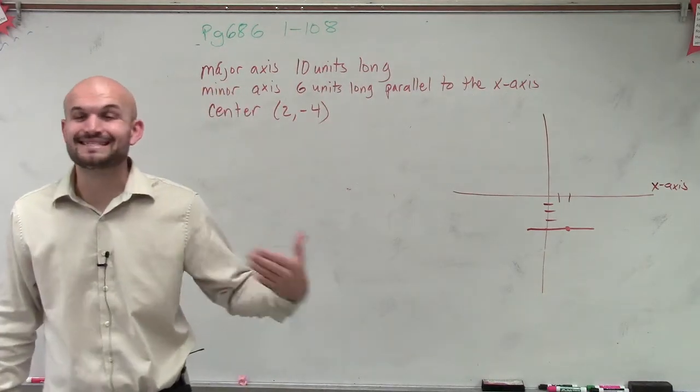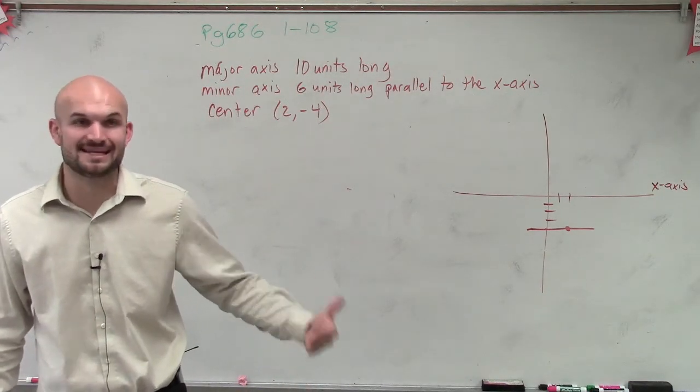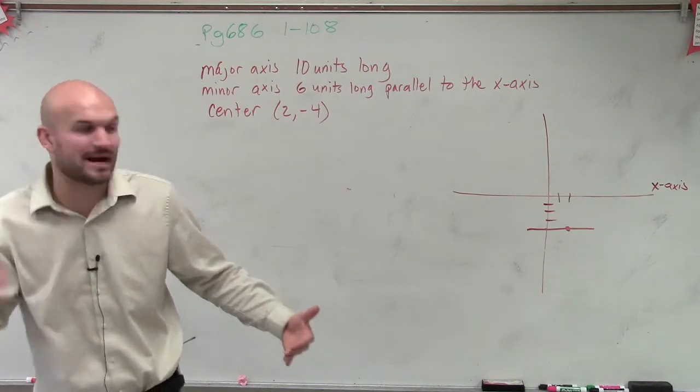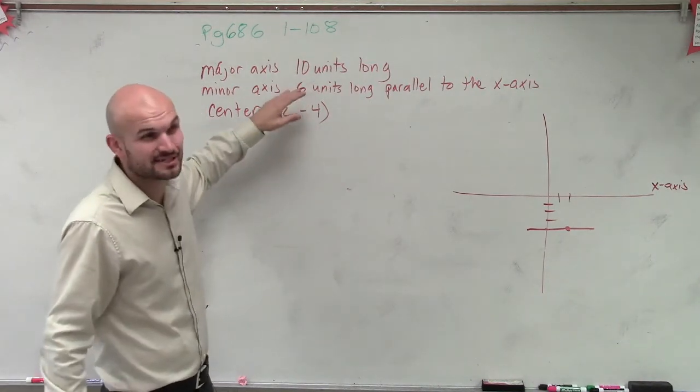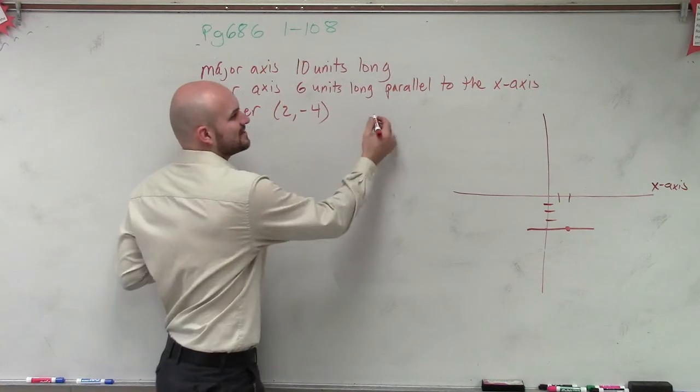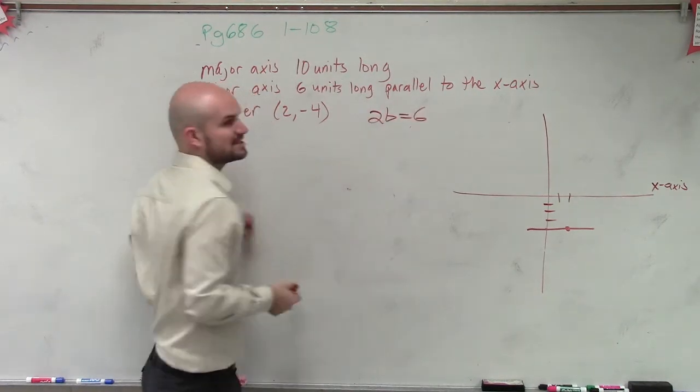Now we need to figure out what is the distance for my minor axis. Well, it says the minor axis is 6 units. And remember, the distance of the minor axis is 2b equals 6, right?